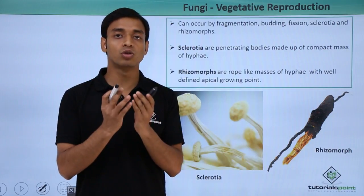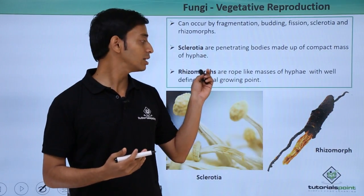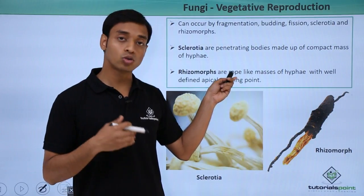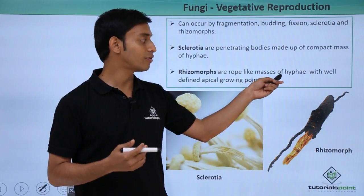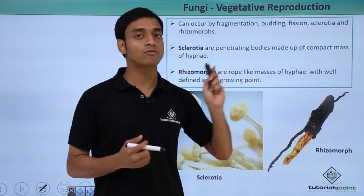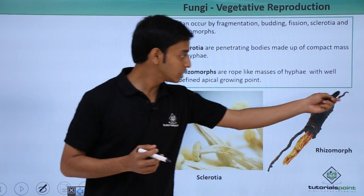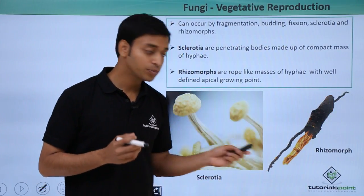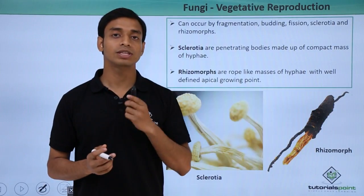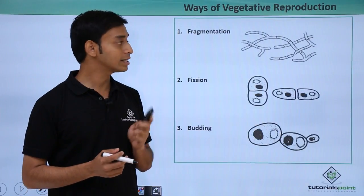Compared to sclerotia, rhizomorphs are rope-like structures — if we keep a mass of rope together, that is how the rhizomorphs look. Rhizomorphs are rope-like masses of hyphae, but in addition they have well-defined apical growing points. These well-defined growing points help in the growth of the rhizomorphs.